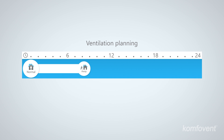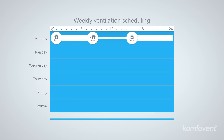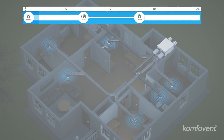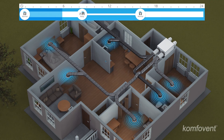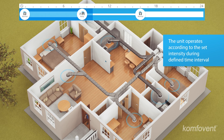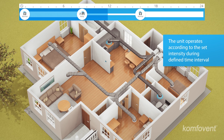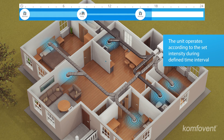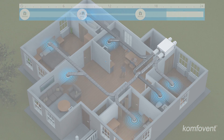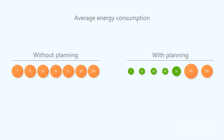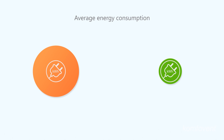Weekly scheduling adjusts the ventilation intensity to your lifestyle. Rooms are ventilated every day of the week for a limited number of hours in accordance with the scheduling program. When nobody is at home, the automation reduces the ventilation intensity, and before you return, the unit starts to operate in normal mode. The scheduling programs can reduce your energy costs for ventilation by half.